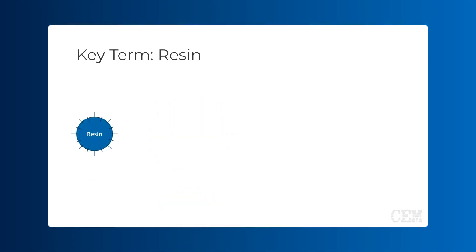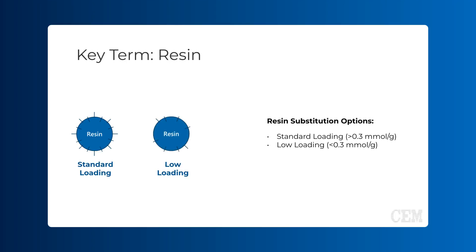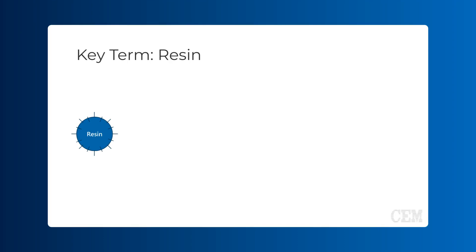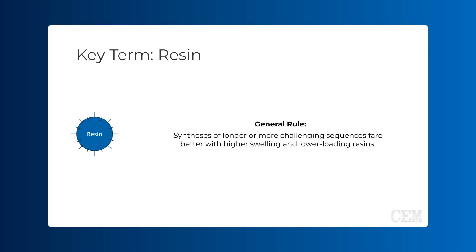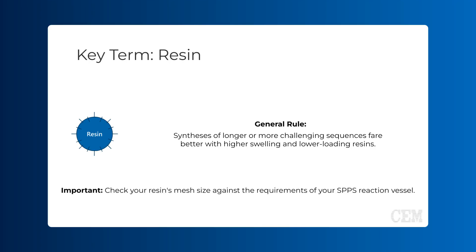Another important resin property is substitution, or the density of peptide anchor points, which is typically measured in millimole per gram. It indicates the loading capacity of the resin, or how many peptide chains can be synthesized per gram of resin. Like swelling, substitution is important for optimizing yield and mitigating steric hindrance. For lengthier and/or bulkier sequences, a high swelling and low loading resin is always recommended. This information is disclosed by all commercial resin retailers. Please note that resin beads come in many sizes, with 100 to 200 mesh being most common. It is important to check resin mesh size compatibility with the manufacturer of your specific SPPS reaction vessels.